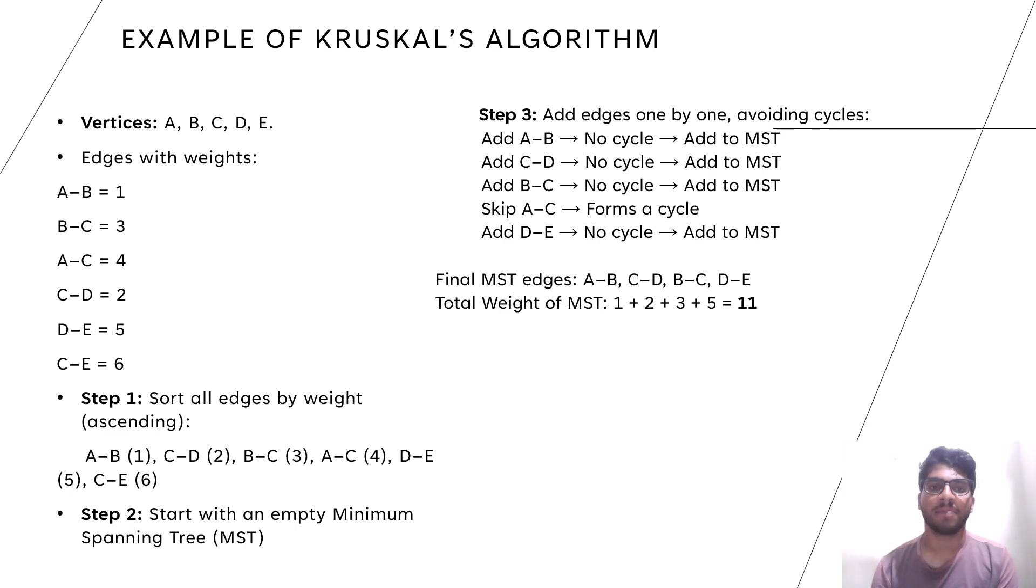Example of Kruskal's algorithm. Let us consider a graph containing nodes A, B, C, D, E where AB has weight 1, BC has 3, AC has 4, CD has 2, DE has 5 and CE has 6.